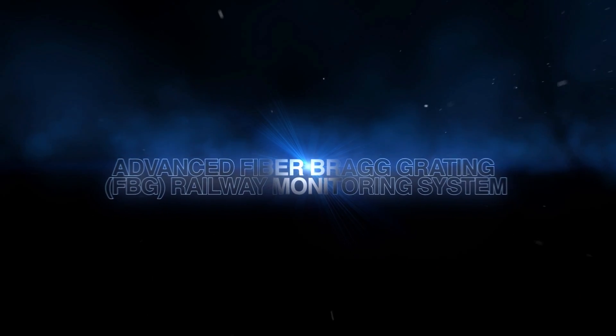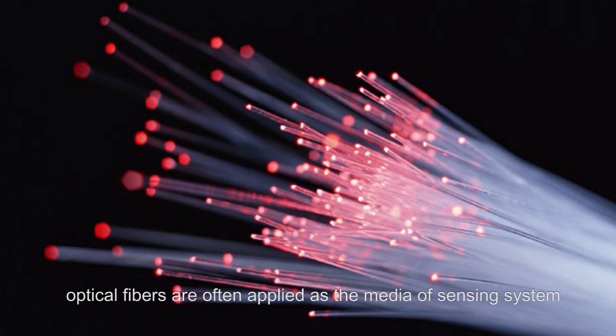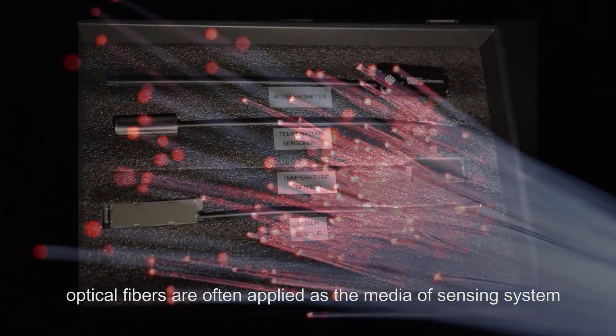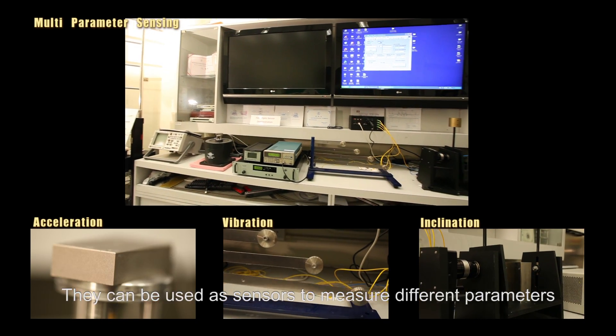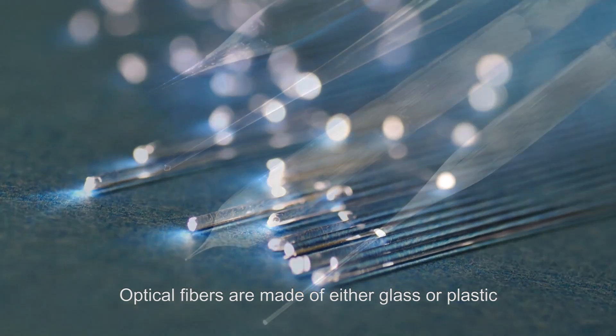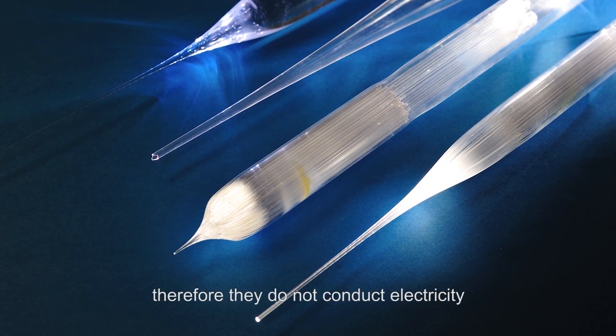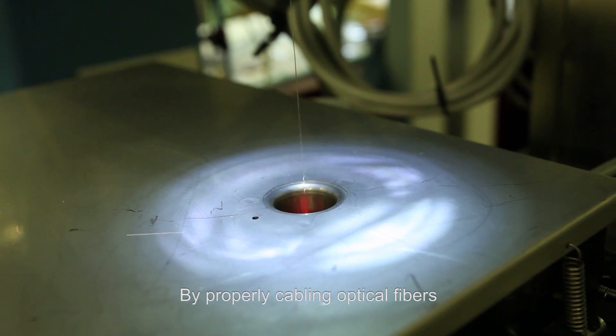Advanced Fiber Bragg Grating FBG Railway Monitoring System. Due to their versatile nature, optical fibers are often applied as the media of sensing systems and are suitable for a wide range of setups. They can be used as sensors to measure different parameters through the modulation of light in reaction to the environment. Optical fibers are made of either glass or plastic, therefore they do not conduct electricity.